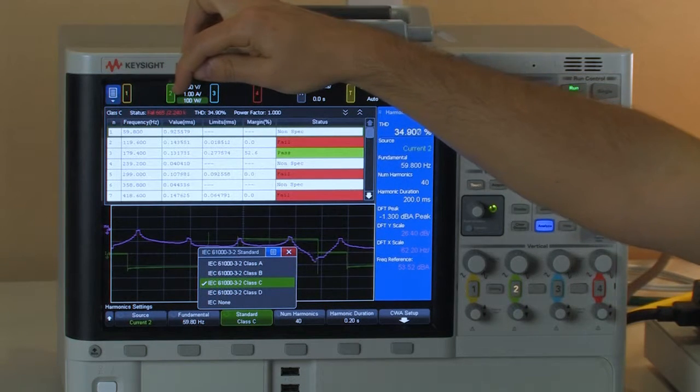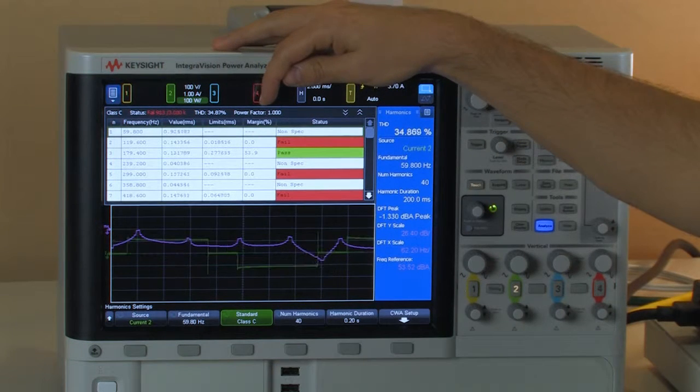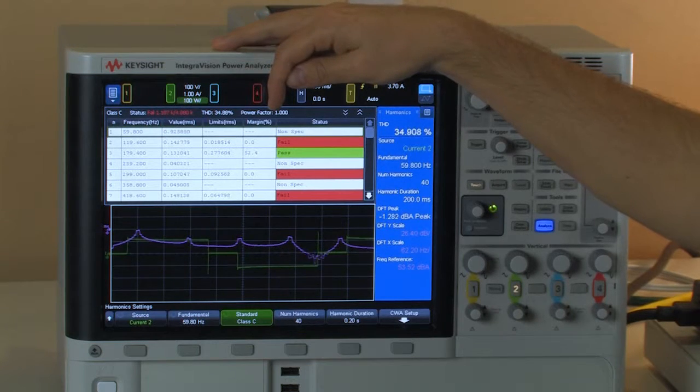So that count is going up as the same waveform is going into the box. And also the third harmonic for class C uses the power factor to determine the limit.